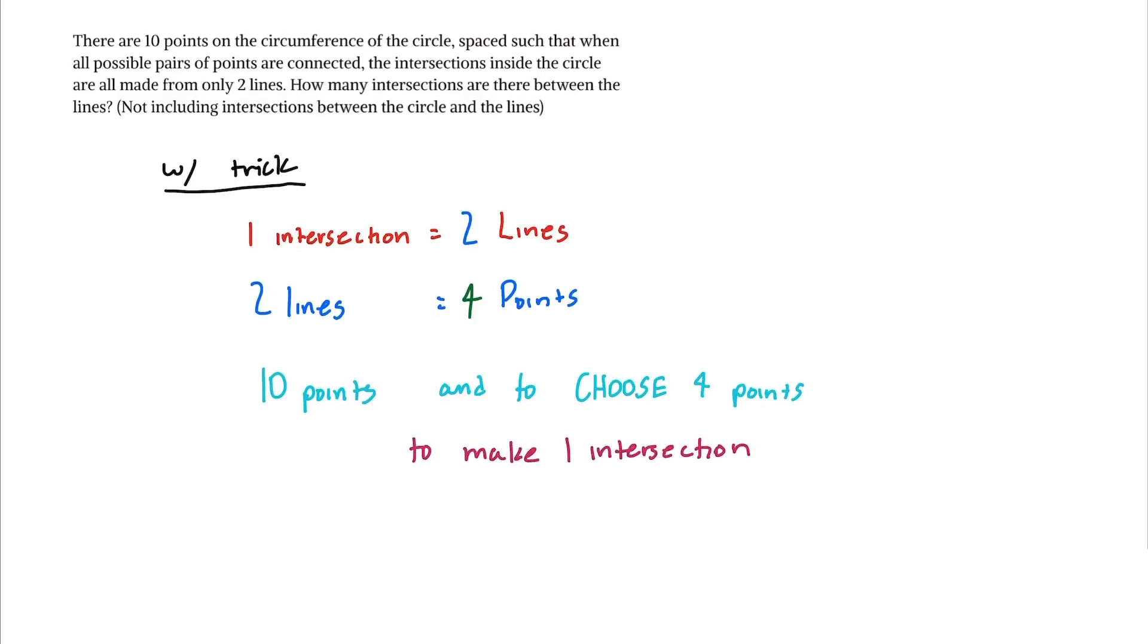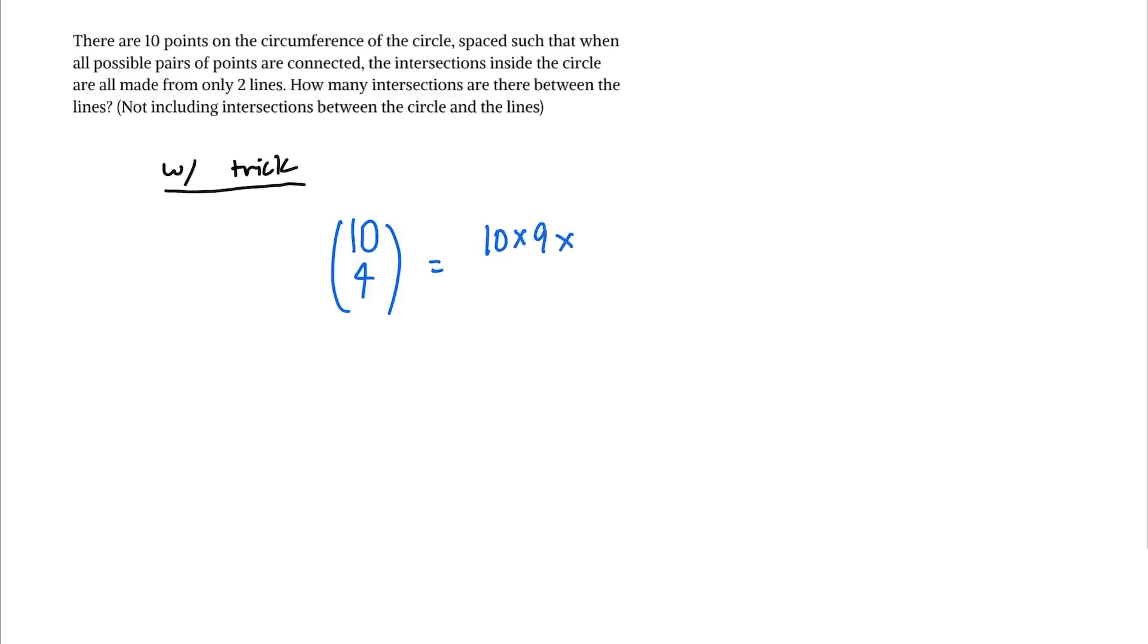And every set of four points we choose out of the 10 points will be different because that's how a choose function works. So as hinted earlier, we have 10 choose 4, which is equal to 10 times 9 times 8 times 7 divided by 4 times 3 times 2 times 1, and this may seem like a pretty tedious calculation.